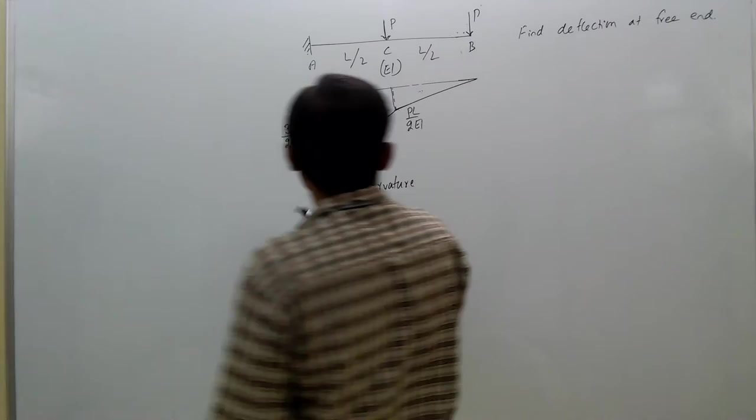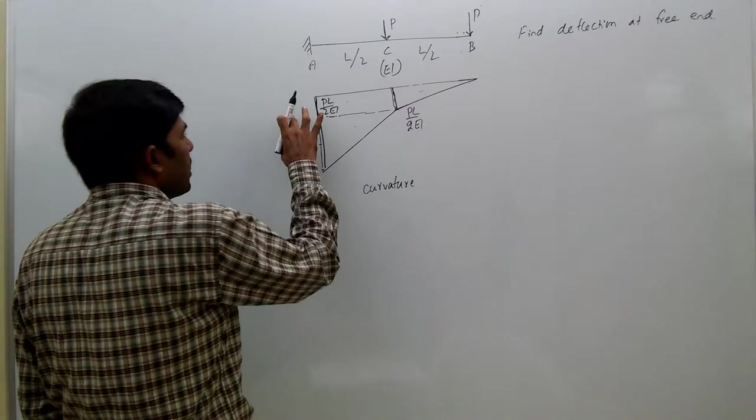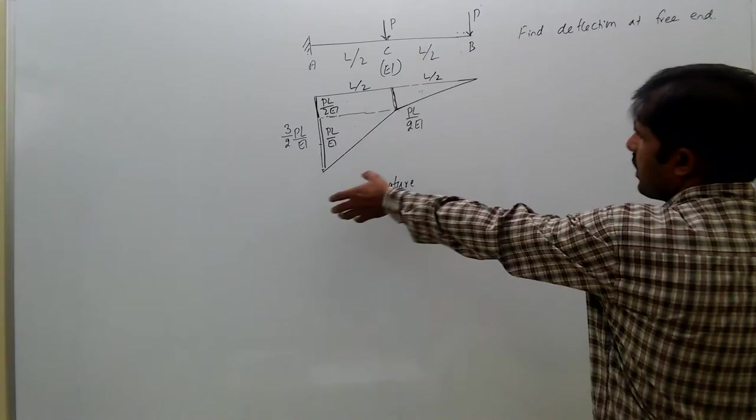Three triangles are there. See, this triangle height is PL/2EI, that means this height here also PL/2EI. The remaining height will be - see this is 3/2, this is 1/2, the remainder is 1 - that means PL/EI. This is L/2, this is L/2.